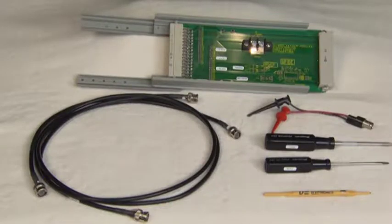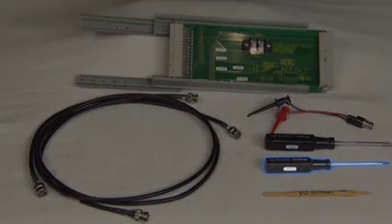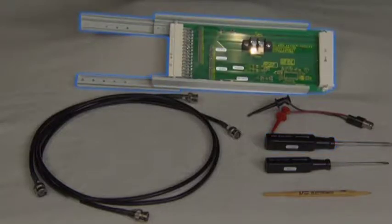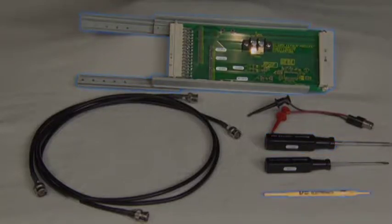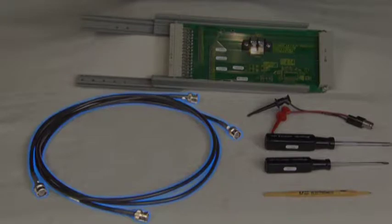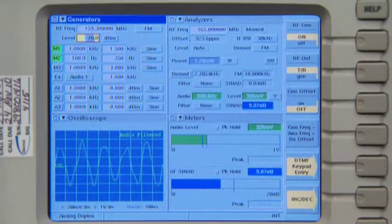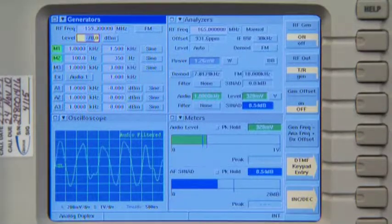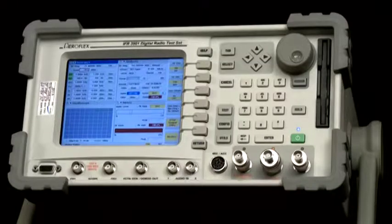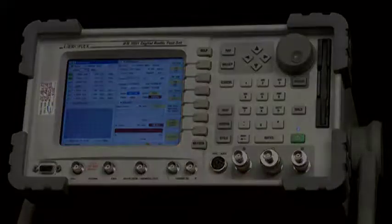The following tools will be required to tune the RF preselector: a small slot bladed screwdriver, Phillips screwdriver, EC48RD extender card, tuning tool, RF cables and adapters if needed, an audio connector, and a communications test set with signal generator and SINAD meter. For this demonstration, we will be using an Aeroflex IFR 3900 series communications test set.